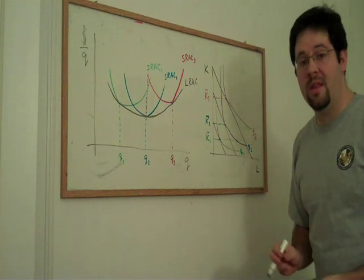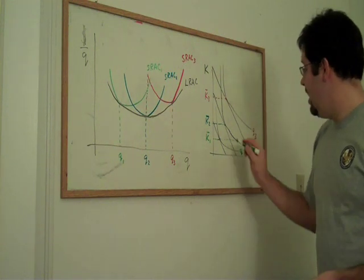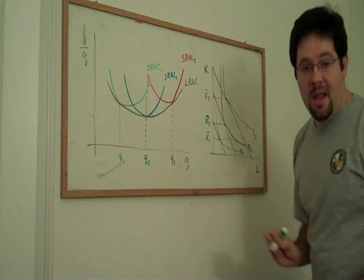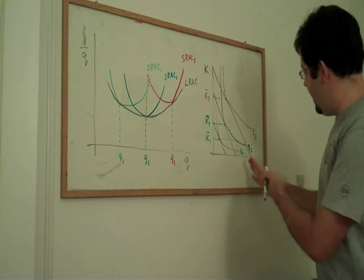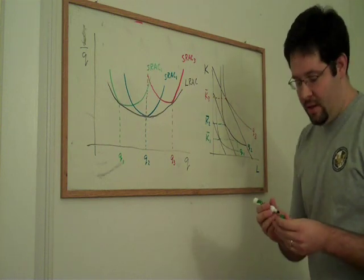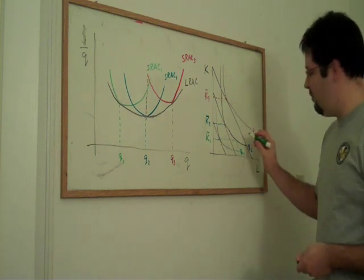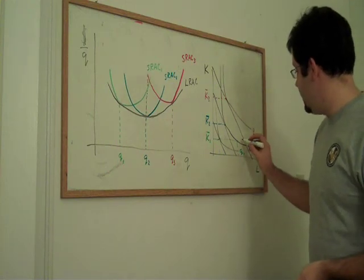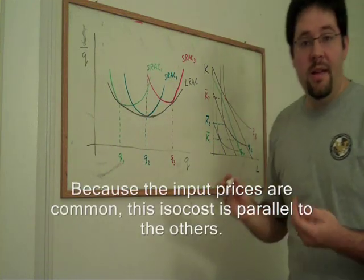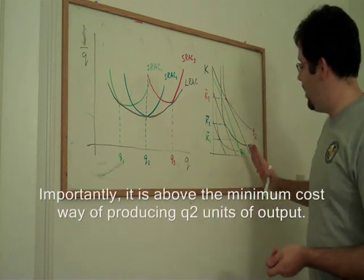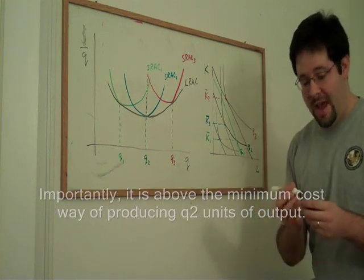So we're stuck with K1 units of capital. And so we're only able to expand the amount of labor that we have to get our output to expand the way that we want it to. And so what happens is that if we were to draw an isocost, we would see that the isocost is above the isocost if we could actually freely adjust our capital and labor.